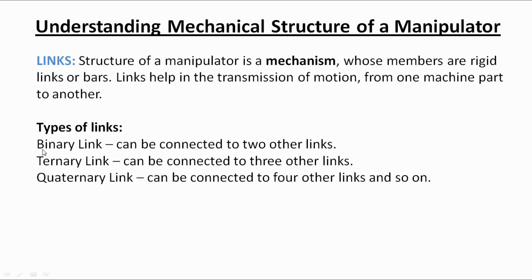Binary links are those that have two nodes — that is, the links that can be connected to two other links. Similarly, ternary are those that can be connected to three other links and quaternary to four other links and so on, as shown here in the diagram.